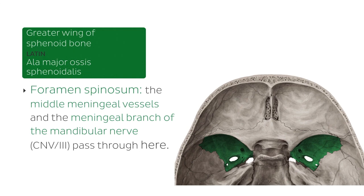We're going to take a closer look at these foramina later on in the tutorial and highlight them. Just keep in mind that they're found on the greater wing of the sphenoid bone. Another important point is that the lateral and anterior surfaces of the sphenoid bone make up the infratemporal surfaces and the lateral walls of the orbit, respectively.